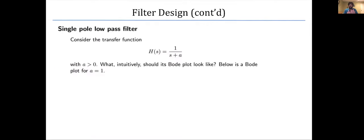For a filter design example, start with the simplest possible transfer function: H(s) = 1/(s + a), with a positive. Intuitively: this has a single pole at s = -a. When s = 0 (DC component, ω = 0), H = 1/a — those frequencies pass. As s increases to very large values, H approaches 0 — high frequencies are killed. This is a single pole low-pass filter.